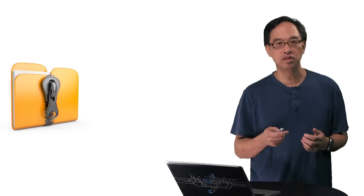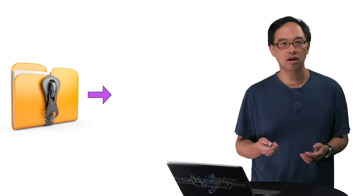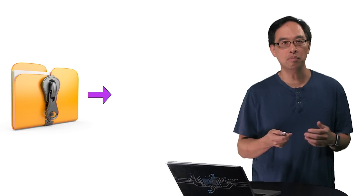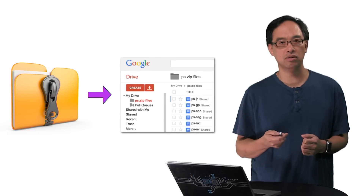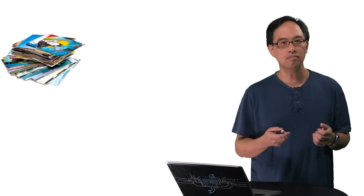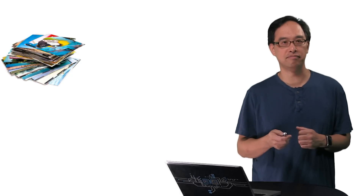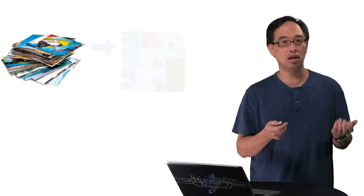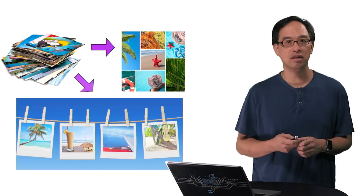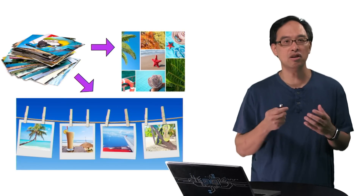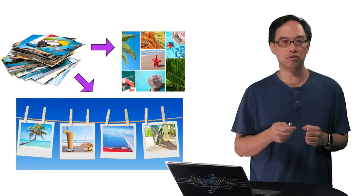With the API, you can write an app that takes a zip file, decompresses the archive, and uploads those files to a Google Drive folder. Or take a stack of photos on Drive, build a collage or two, and upload the generated image back to Drive.